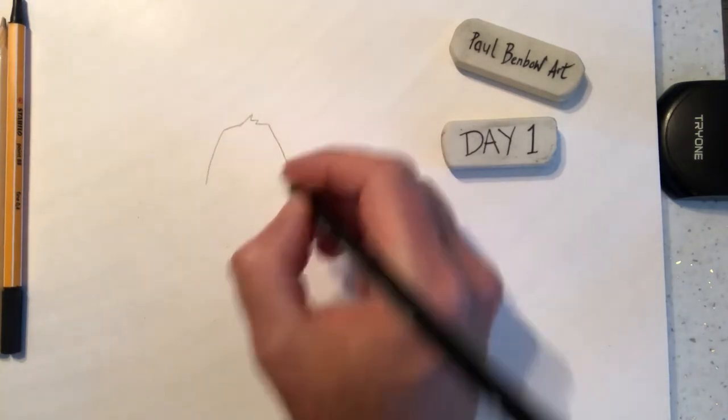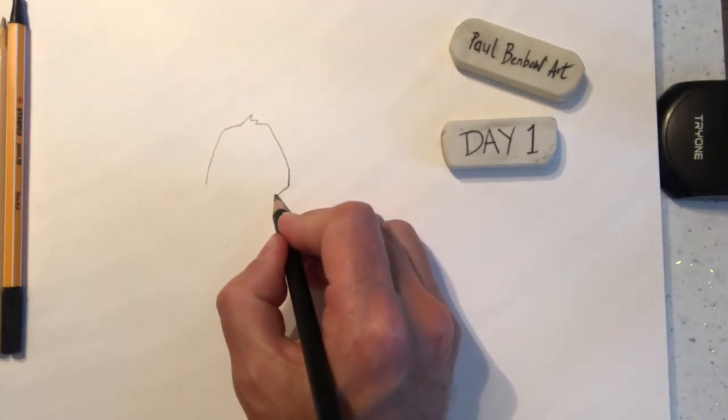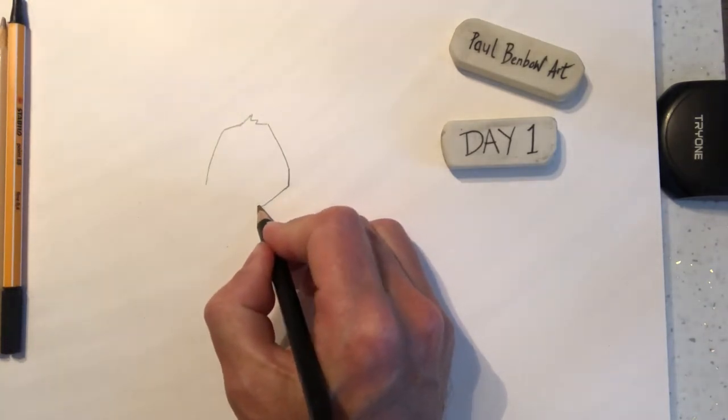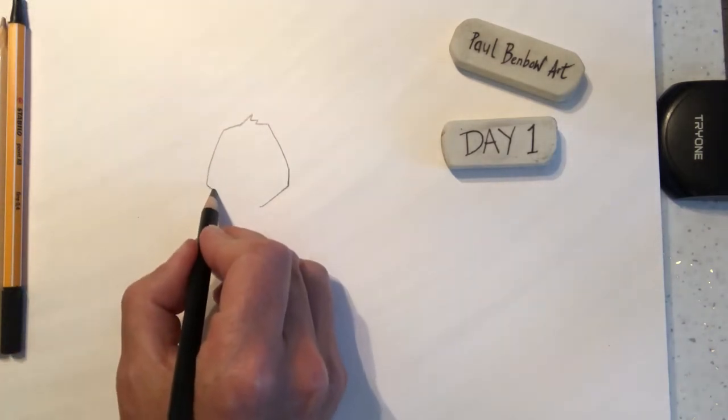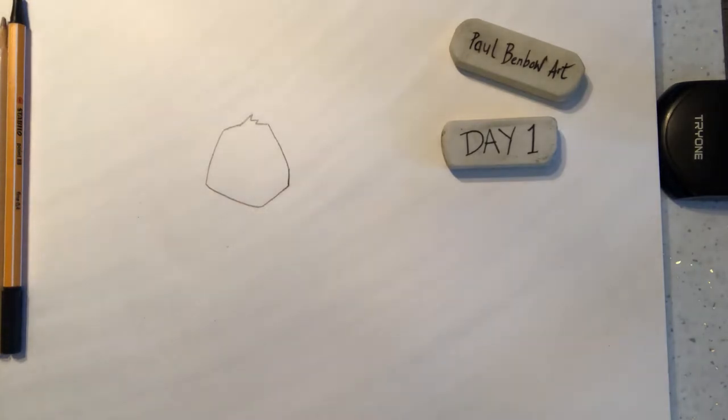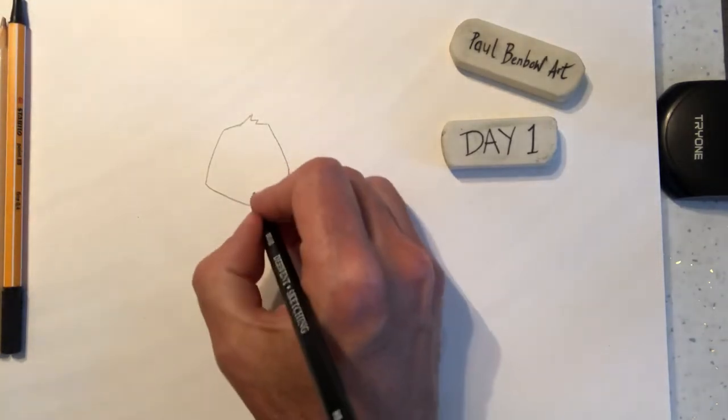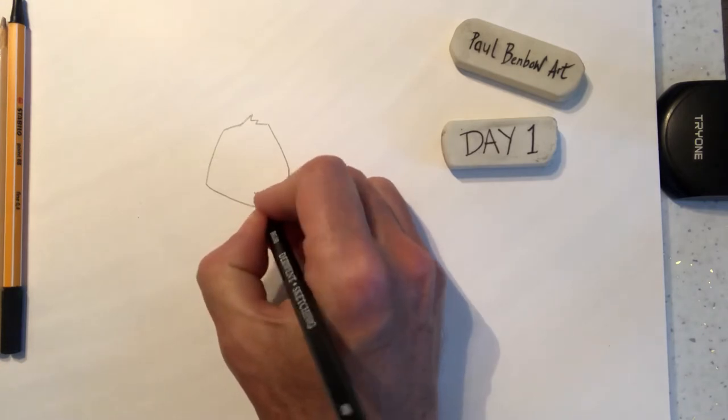On the other side we're going to go down to about here, then we're going to do a straight line down. This is going to form the panda's chin. We just have to line these two up.